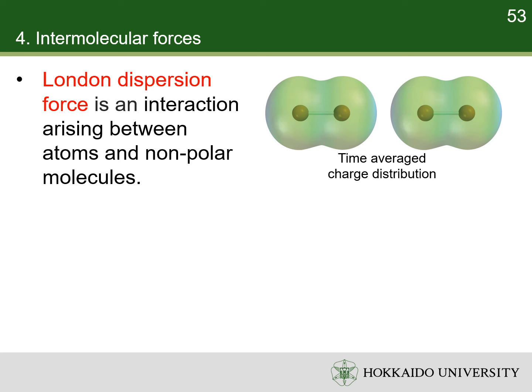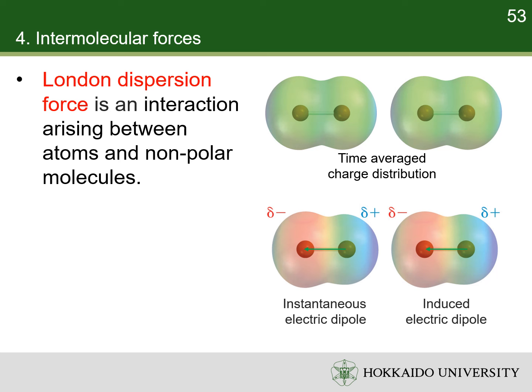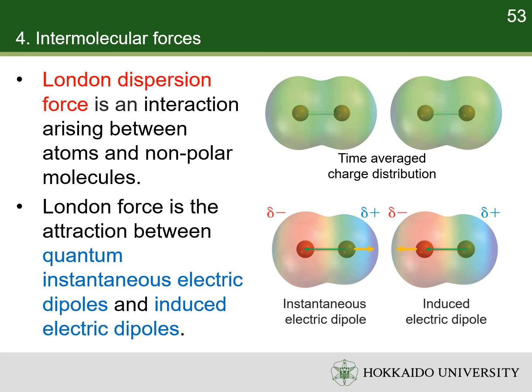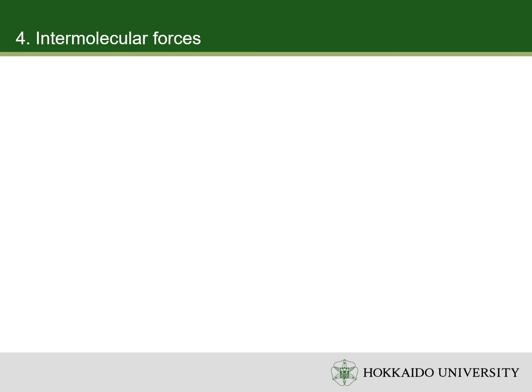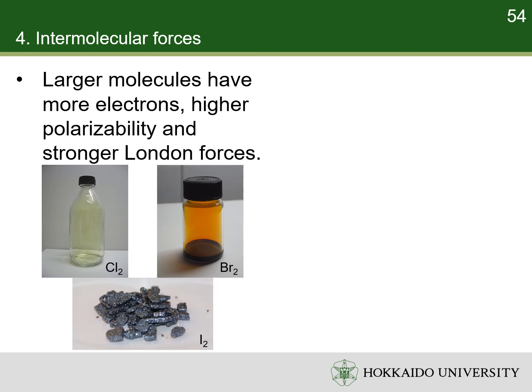London dispersion forces are a type of intermolecular forces acting between atoms and nonpolar molecules. The electron distribution around an atom or molecule undergoes fluctuations in time. These fluctuations create instantaneous electric dipole moments which are felt by other nearby atoms and molecules, which in turn acquire an induced electric dipole moment. So, London forces are the forces between instantaneous and induced electric dipoles that attract each other. Because a larger molecule with more electrons is typically more polarizable, a larger molecule is likely to have stronger London forces. For example, the halogens range from gaseous fluorine and chlorine, through liquid bromine, to solid iodine at room temperature.